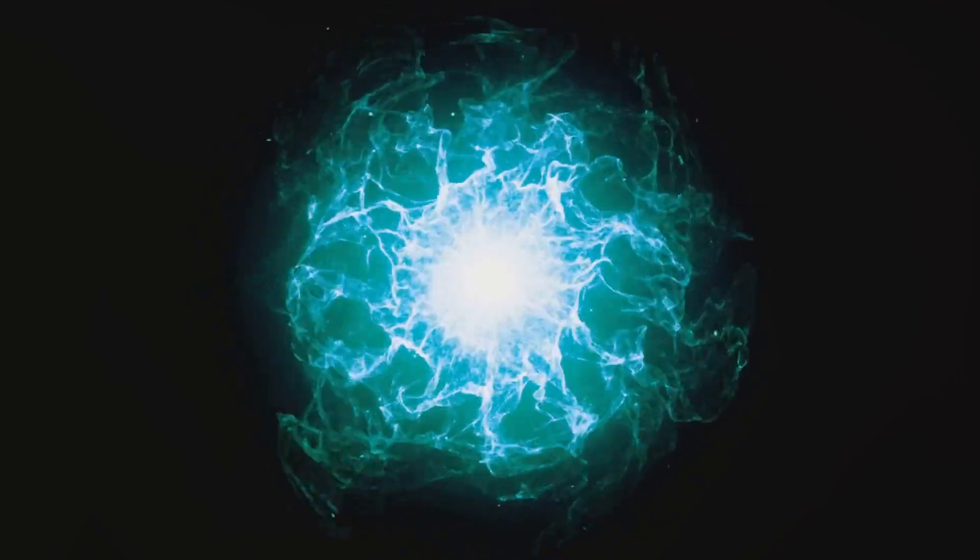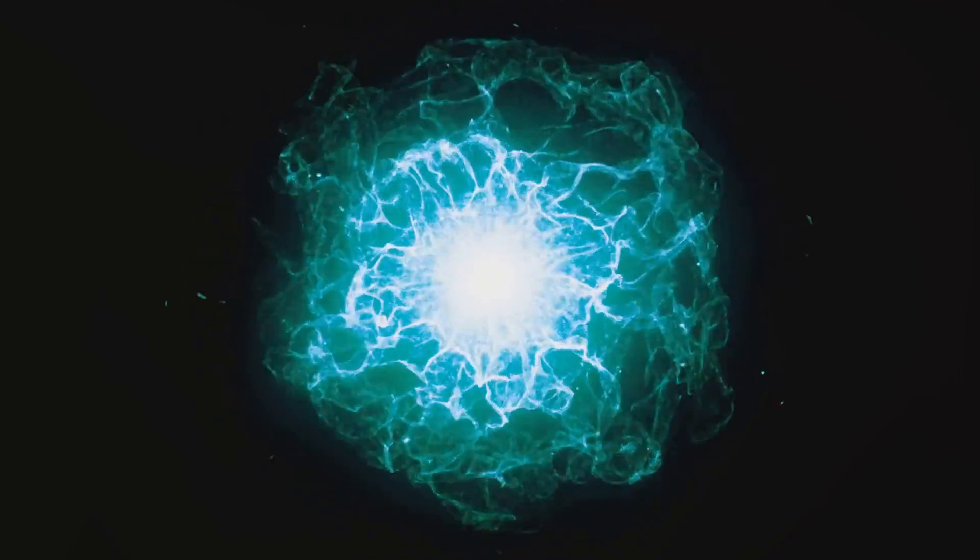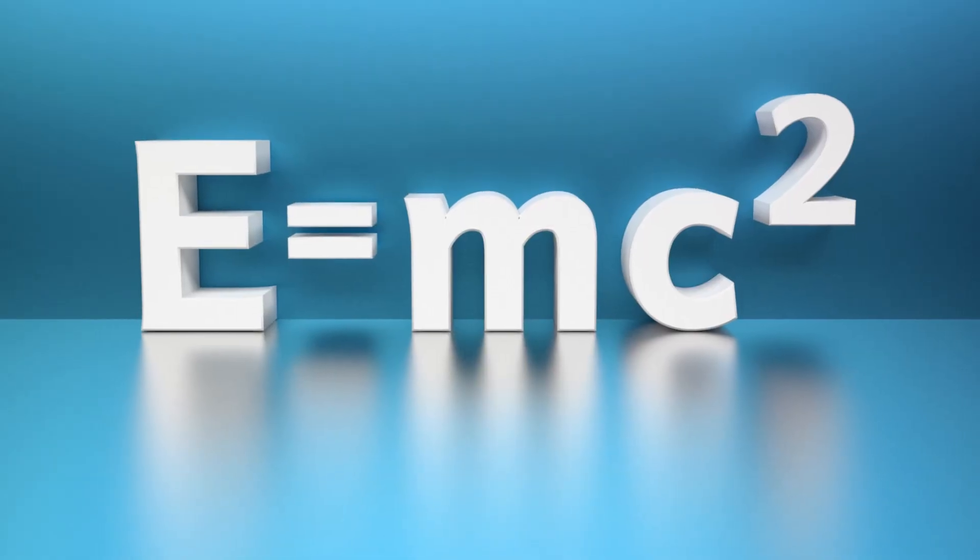This equation tells us that mass can be converted into energy and vice versa. So, when hydrogen atoms fuse to form helium, the resulting helium atom has slightly less mass than the original hydrogen atoms. But where does this missing mass go?